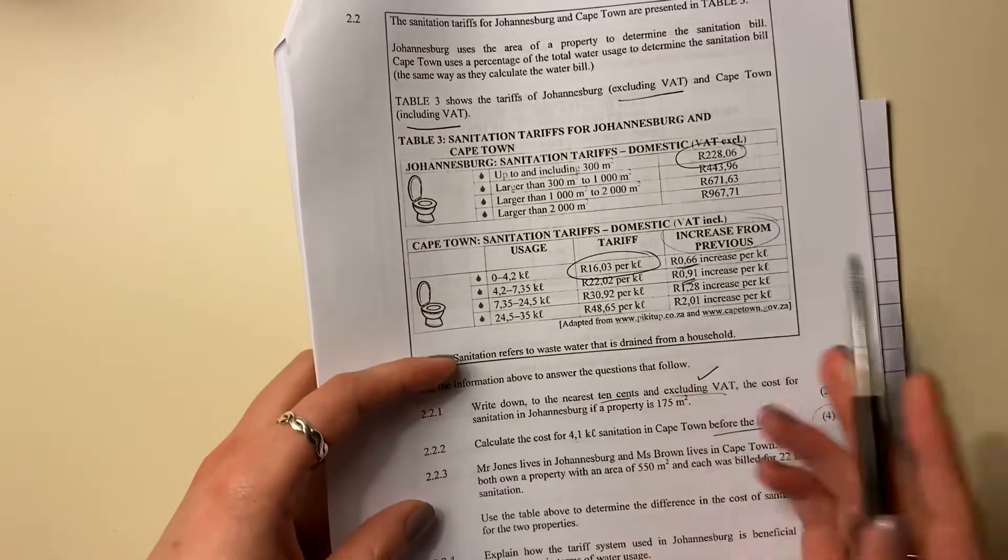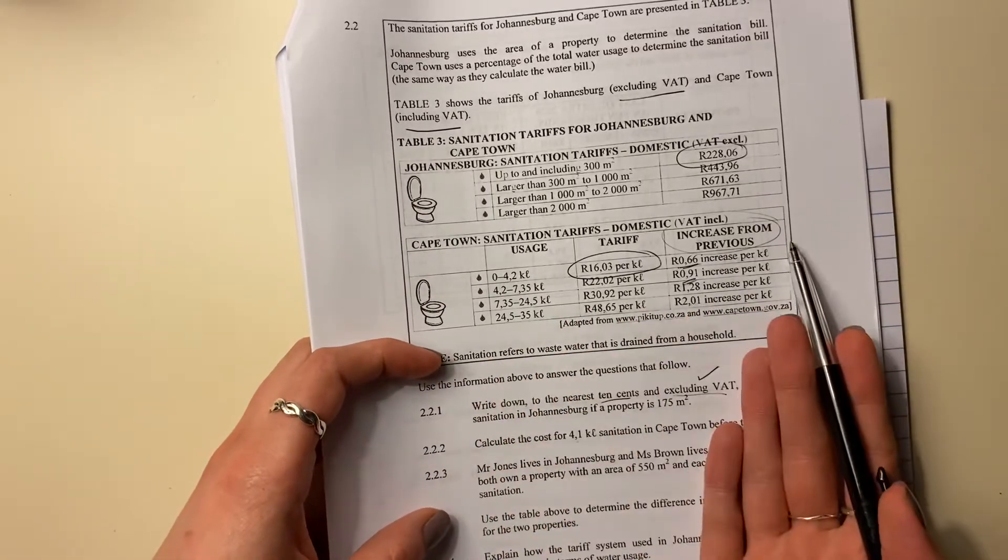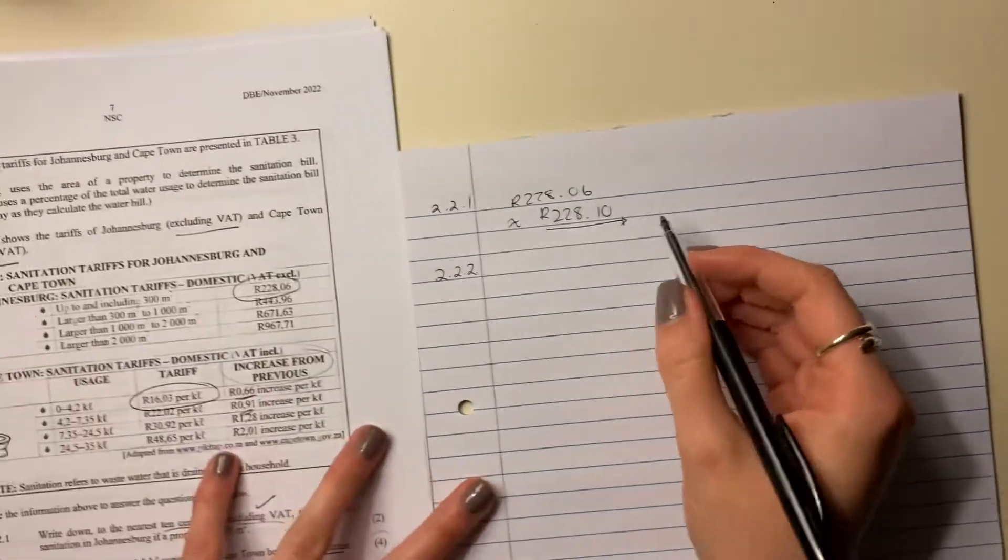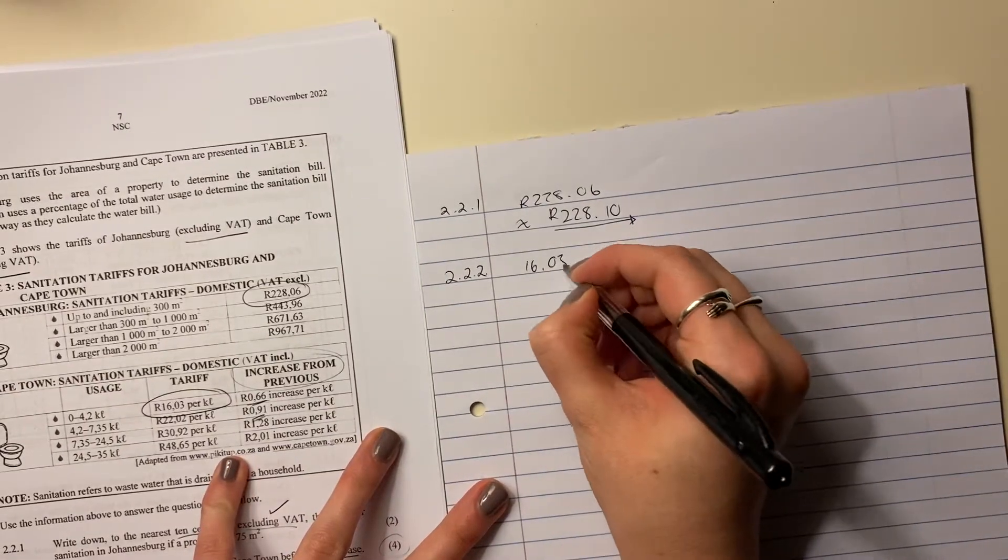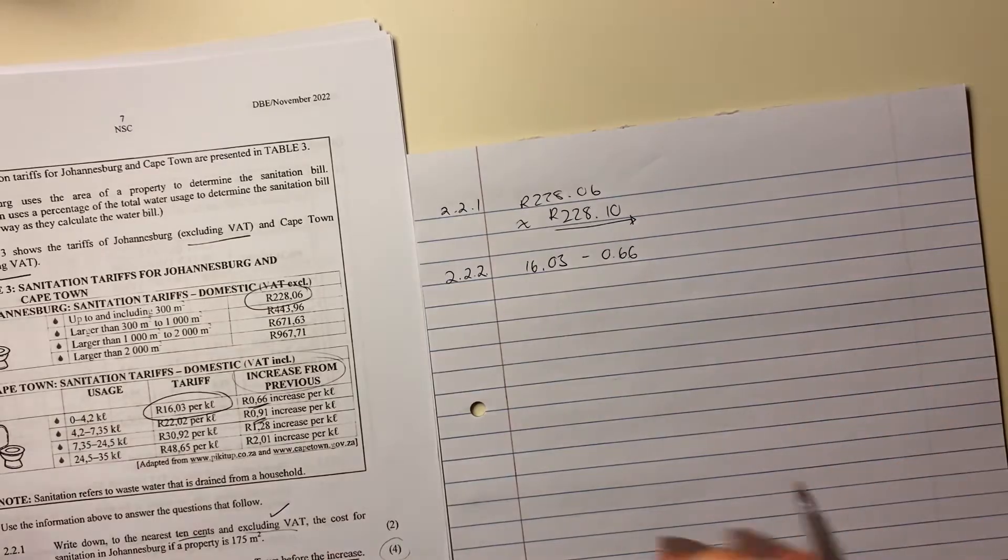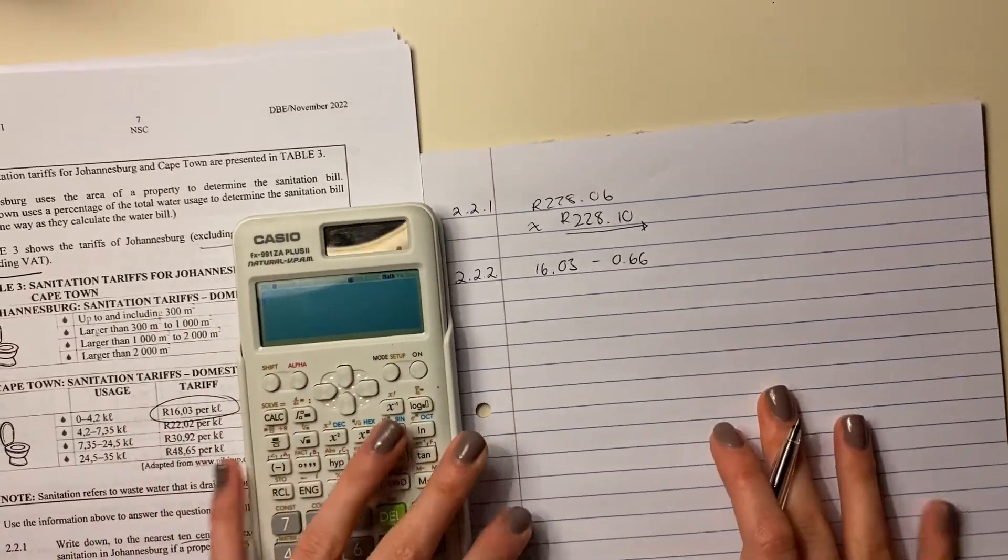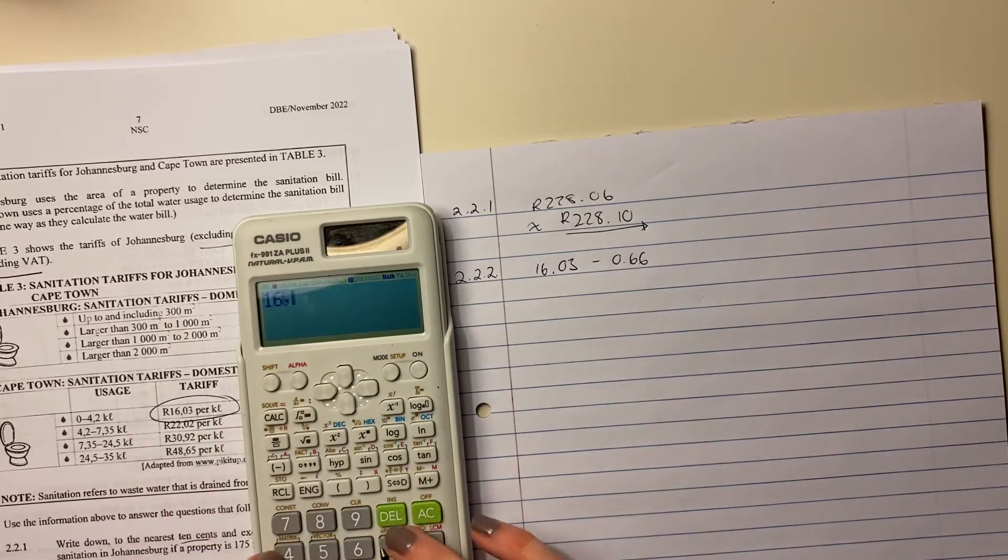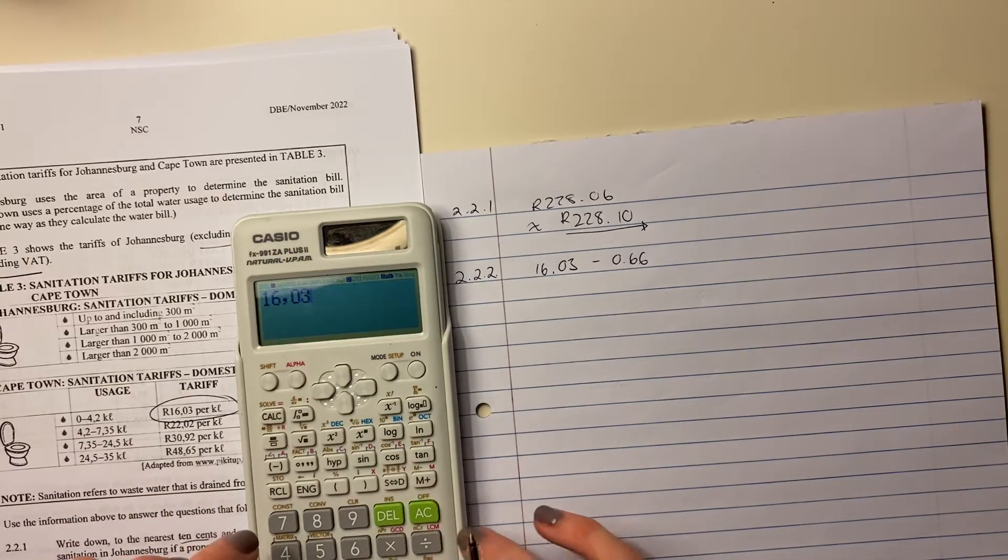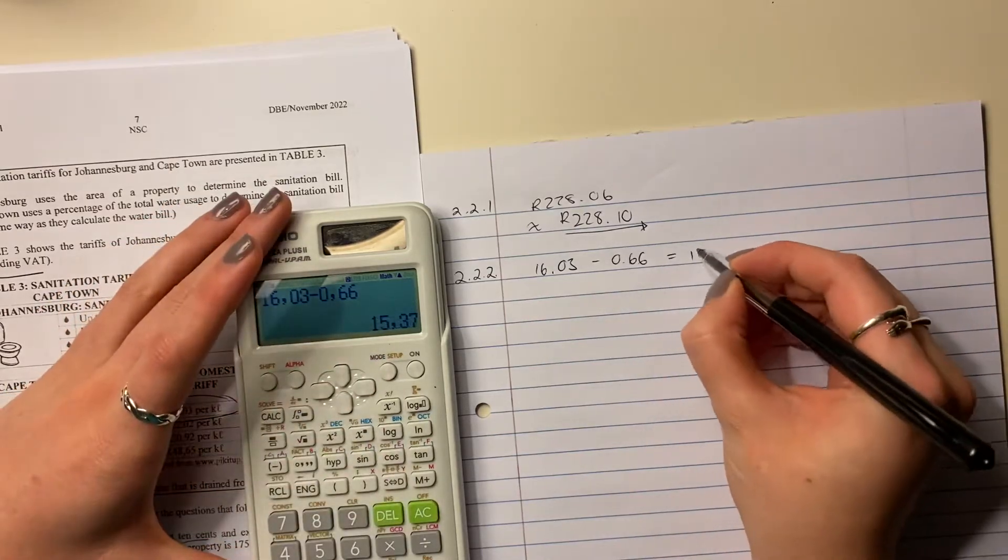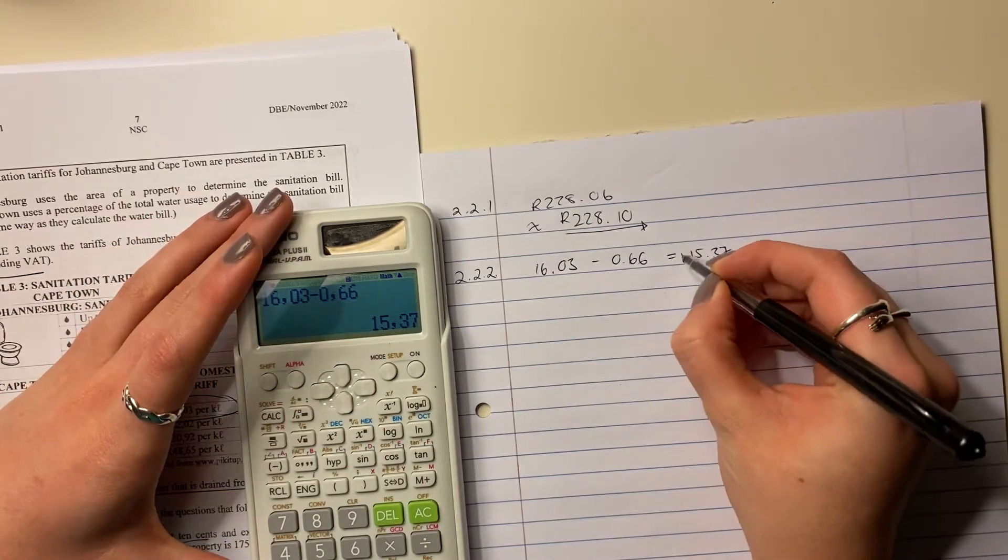So let's first say, what would it have been per kiloliter if the increase hadn't been applied yet? So we're going to start by saying 16.03 and we're going to minus 66 cents from it. The reason we're going to do that is because then we get what the amount was prior to the increase. And then we are almost where we need to be in order to do our calculation. So the cost was 15.37 rand.